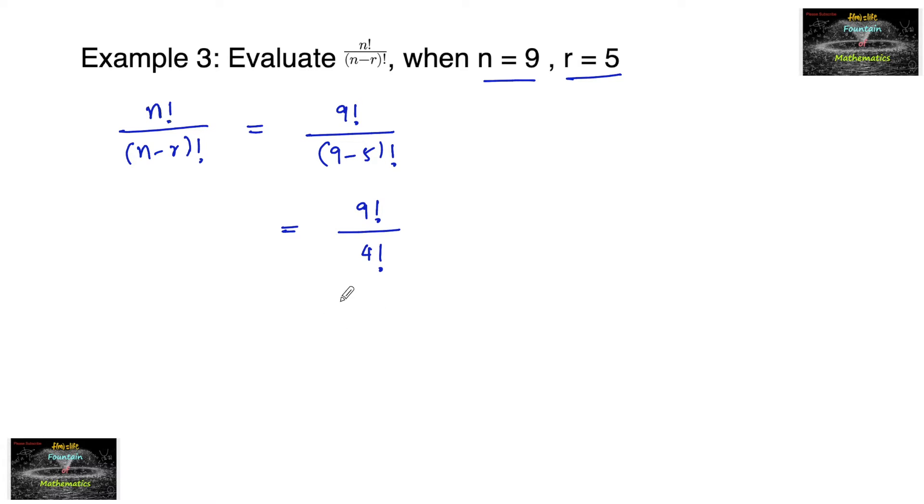As I told you before, first you identify which one is larger and which one is smaller. 9 factorial is larger and 4 factorial is smaller, and hence we can reduce this 9 factorial in terms of 4 factorial.